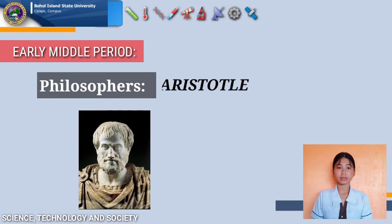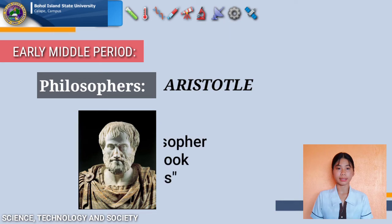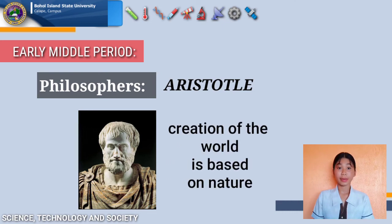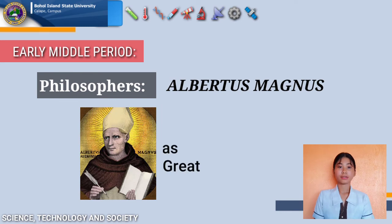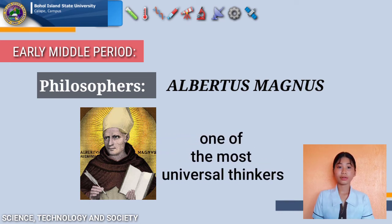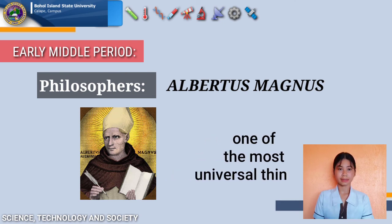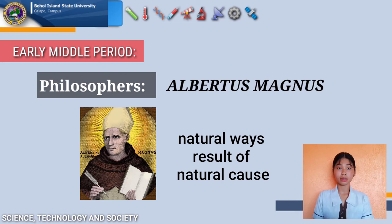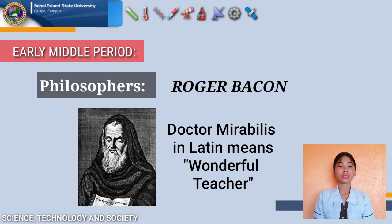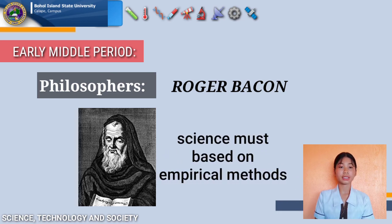Next is Aristotle (384–322 BC), a Greek philosopher and polymath. His book Physics made significant and lasting contributions to human knowledge; he believed the creation of the world is based on nature only. Next is Albertus Magnus (1200–1280), known as Albert the Great, one of the most universal thinkers of the Middle Ages, who believed in natural ways as the result of natural causes. Finally, Roger Bacon (1214–1294), known as Doctor Mirabilis — Latin for 'wonderful teacher' — was an English Franciscan philosopher who believed that science must be based on empirical methods.